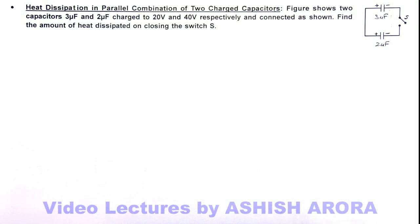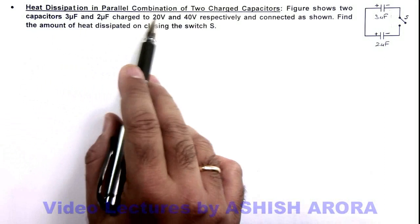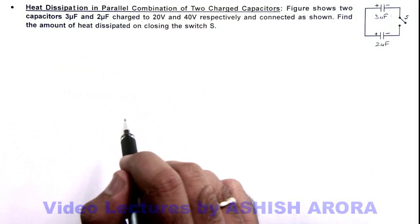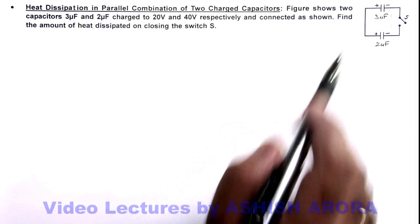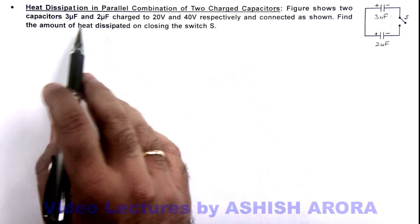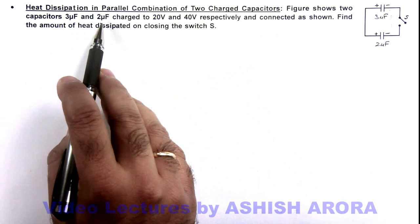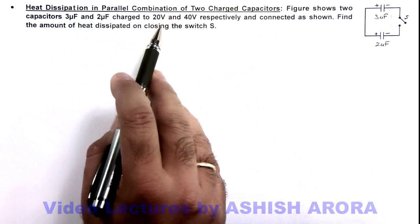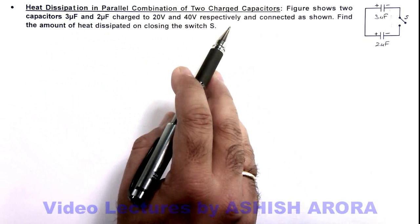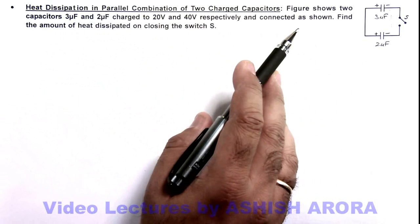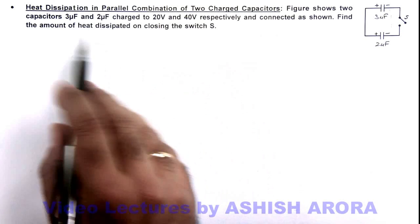In this illustration, we'll study heat dissipation in parallel combination of two charged capacitors. This figure shows two capacitors, 3 microfarad and 2 microfarad, charged to 20 volts and 40 volts respectively, connected as shown. We are required to find the amount of heat dissipated on closing switch S.